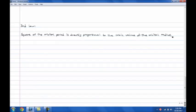The third law stated that the square of the orbital period, which is the time a planet takes to revolve around the Sun, is directly proportional to the cubic value of the orbital radius, which is the distance between any planet and its Sun.